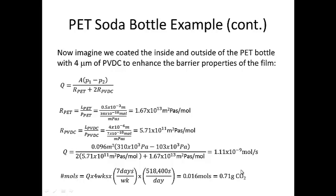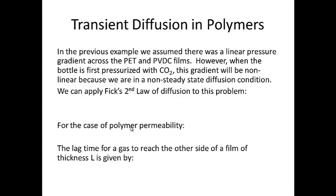So this is a reduction in the amount of CO2 lost, but you'll notice it's not a very large reduction — only about 0.05 grams of CO2 have been prevented from permeating across the membrane. This could be for a number of reasons. Number one, PVDC has a permeability of about one-fourth that of polyethylene terephthalate, but it's not quite low enough to prevent CO2 from permeating through the walls of the soda bottle. In addition, our thickness of the PVDC layer is only four microns thick. We'd want to use a much thicker film of PVDC to prevent more CO2 from passing through. Another solution would be to use soda glass instead of PVDC, which has a significantly lower permeability.